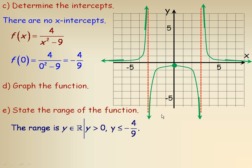So, y is a positive value. y is greater than 0. For this part right here, the highest y value is negative 4 ninths. So, y is less than or equal to negative 4 ninths. Notice, it can equal negative 4 ninths here. But, it can't equal 0 here because the x-axis is a horizontal asymptote. So, we just say y is greater than 0.